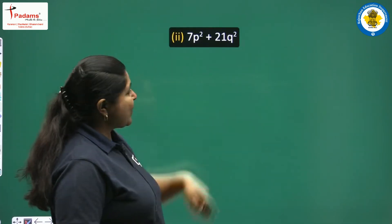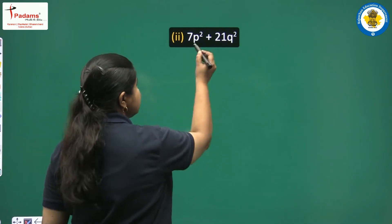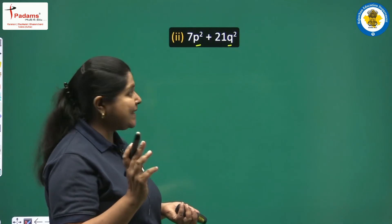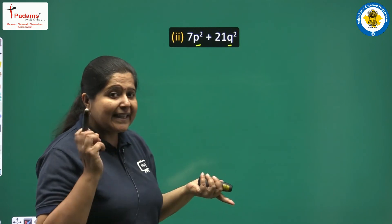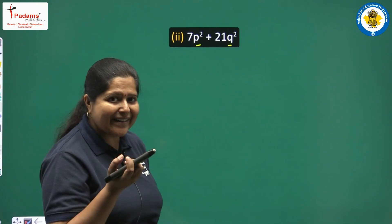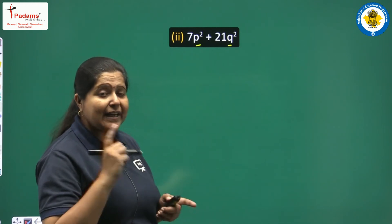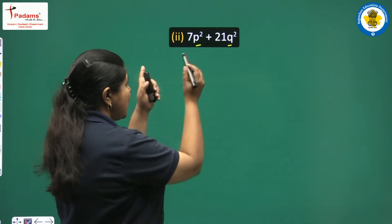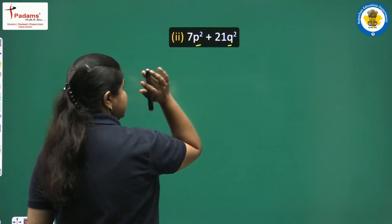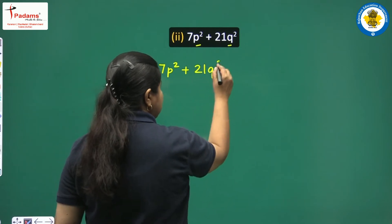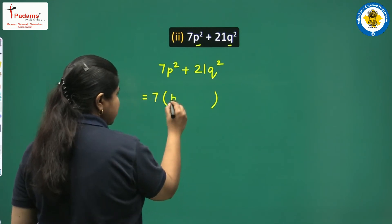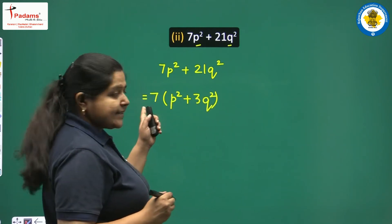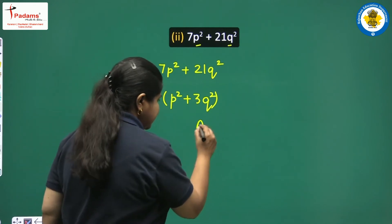Next we have 7p² + 21q². Here we have two terms with p² and q² but no difference of squares identity applies, and the variable parts are different. However, looking at the numbers 7 and 21, both come in the table of 7, so 7 is the common factor. Taking 7 out, we get 7(p² + 3q²). The variables have nothing common. 7 is the only common factor, and this is the required factorization.